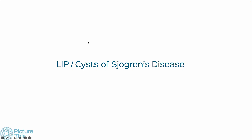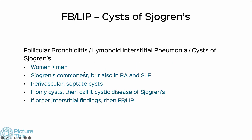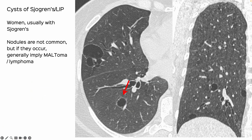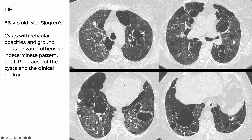Then we come to LIP or cysts of Sjogren's disease. Women are more commonly affected than men. While lymphoid interstitial pneumonia is common in Sjogren's disease, it is also seen in RA and SLE. In patients with Sjogren's, the commonest ILD is still NSIP, but if you take 100 patients of LIP, Sjogren's is the commonest connective tissue disease causing it. Most people now believe that even if there are only cysts with normal intervening lung, you can still call it lymphoid interstitial pneumonia. These patients have an increased incidence of lymphoma and need follow-up.